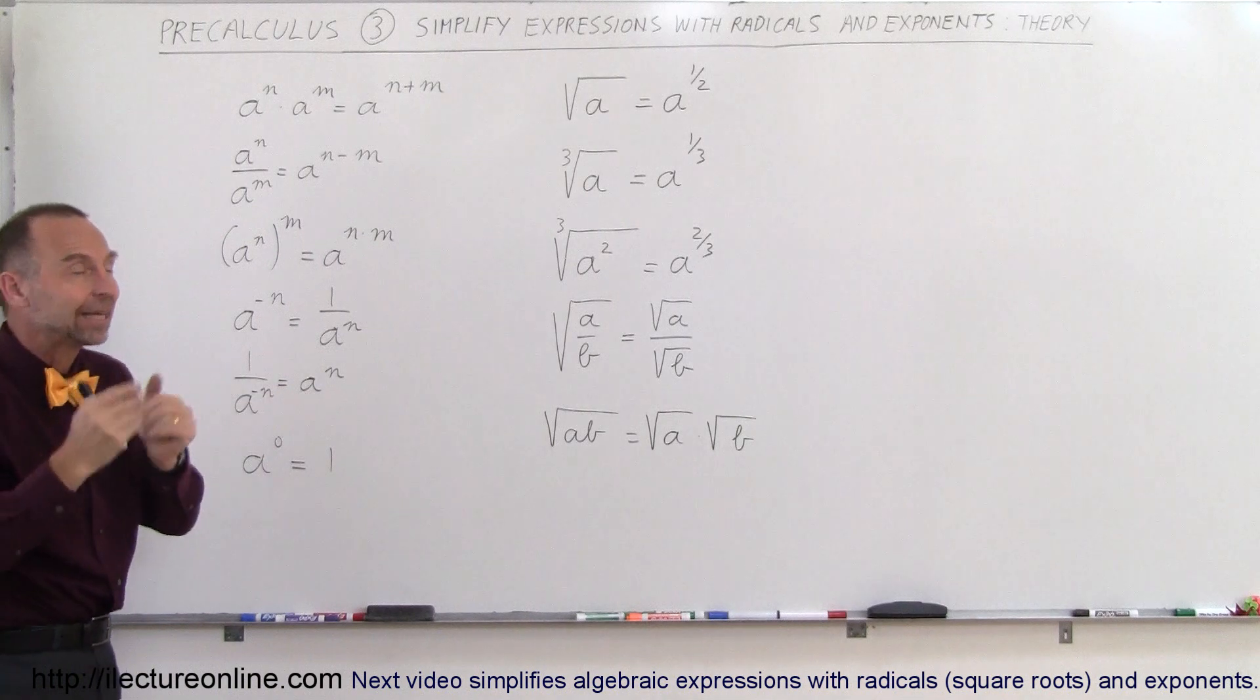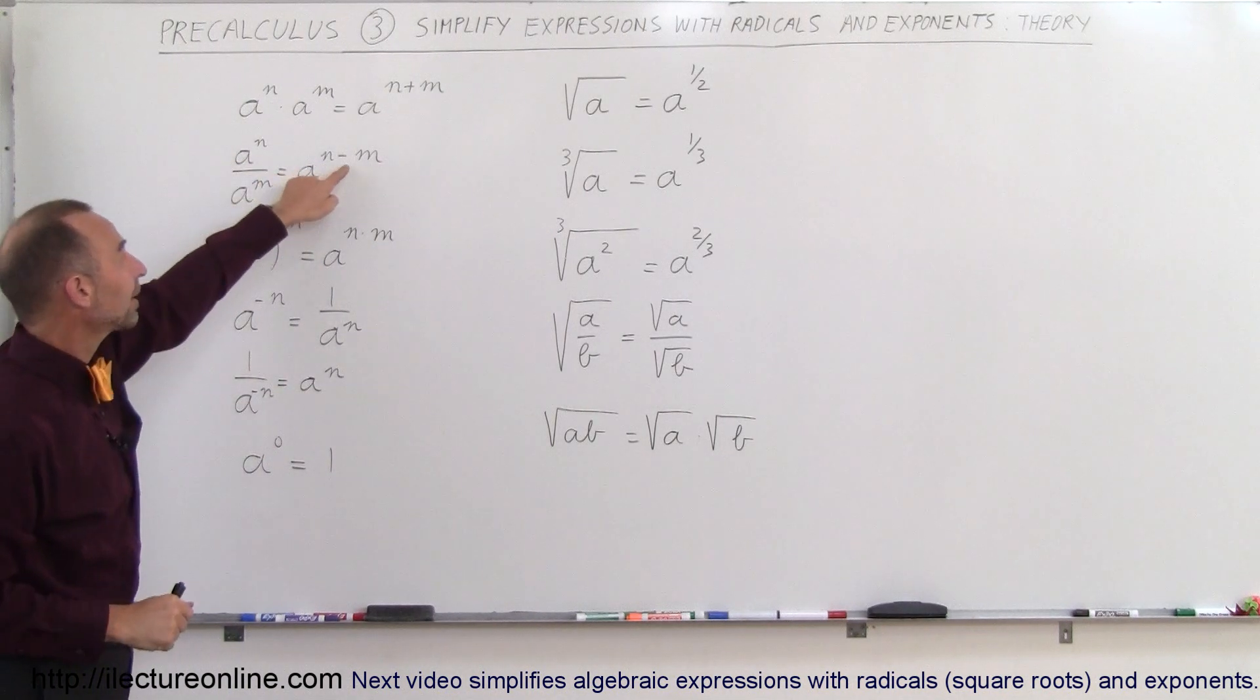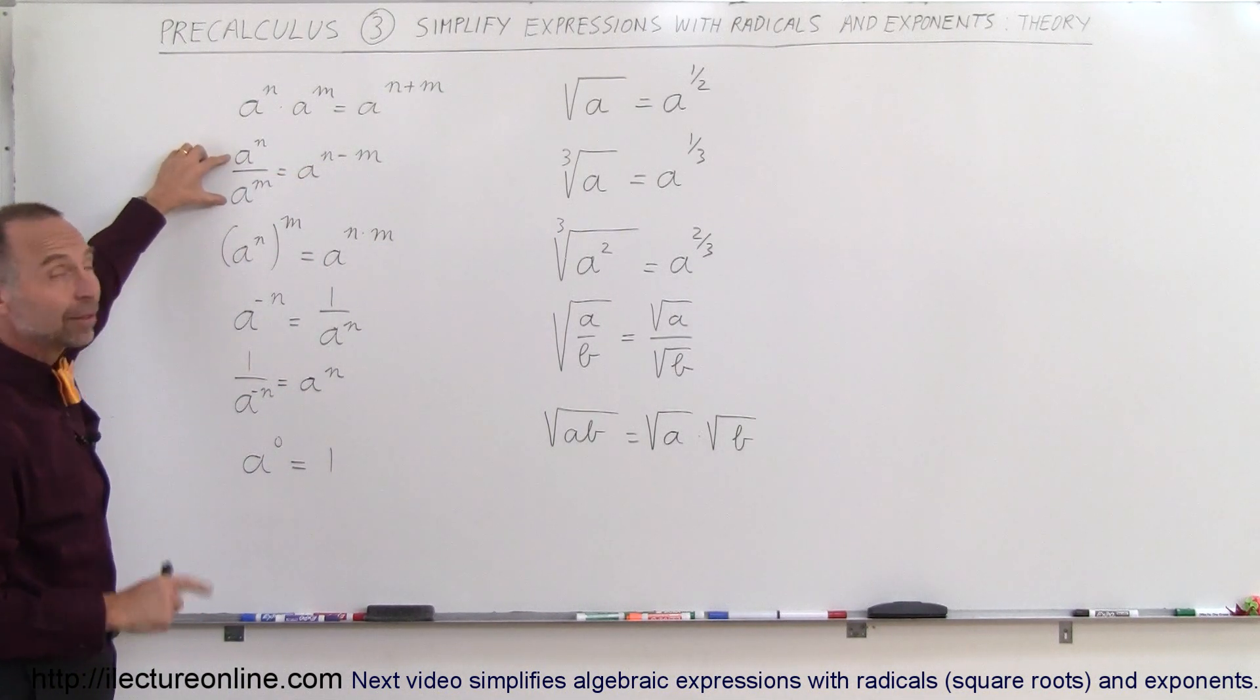We simply add exponents in the case we multiply. In the case of division, we subtract exponents. Again, the rule is that the bases are the same.